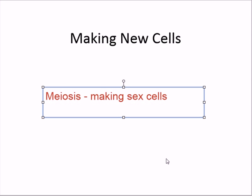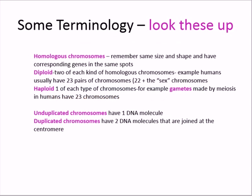So let's take a look at some key things. First of all, some terminology that you need to know. We've talked a little bit about this in lab. First of all, homologous chromosomes. These are chromosomes that are the same size and shape, and have corresponding genes in the same positions or spots along the chromosome. Diploid cells have two of each kind of homologous chromosomes. Another term is haploid, and those are cells that have one of each type of chromosome based on size and shape — gametes, for example.